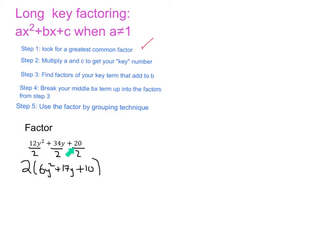If we would have done long key up here, 12 times 20 is gonna give us a huge key number which is 240. So not only is this a good first step as far as factoring out, but it's gonna also make this key number a lot more manageable. So 6 times 10, what is our key number? Our key number is going to be 60.